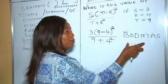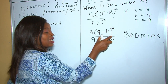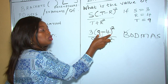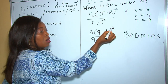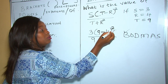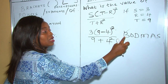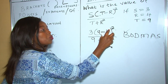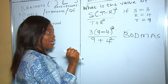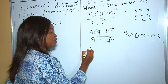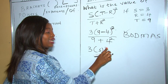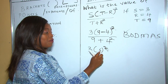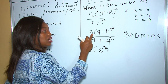Now we apply BODMAS. In the numerator we have brackets and also powers — power 2, or squared. Remember, in BODMAS brackets come before squares, so whatever is inside the bracket is what is being squared. So 9 take away 4 is 5, and for the numerator we have 3 times 5 squared. We remove the brackets by squaring whatever is inside: 5 squared is 25.